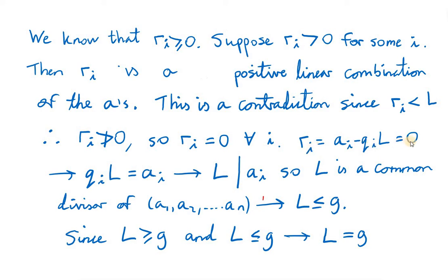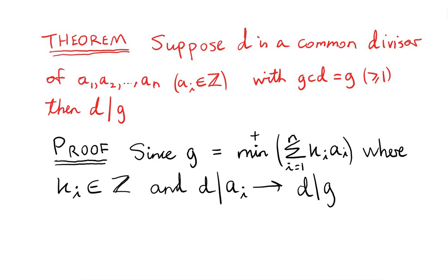Setting ri equal to zero, we see that qi times l must equal ai, which means l must divide ai. If l is a common divisor of all the a's, it means l must be less than or equal to the greatest common divisor. We showed earlier that l is greater than or equal to g, and now we've shown that l is less than or equal to g, so l must equal g. Now we can get back to the theorem. We want to show that any common divisor d of a set of integers will divide the greatest common divisor g. We show that g is a linear combination of all the a's. If d is any common divisor of all the a's, clearly d will divide a linear combination of all the a's, so d will divide g.